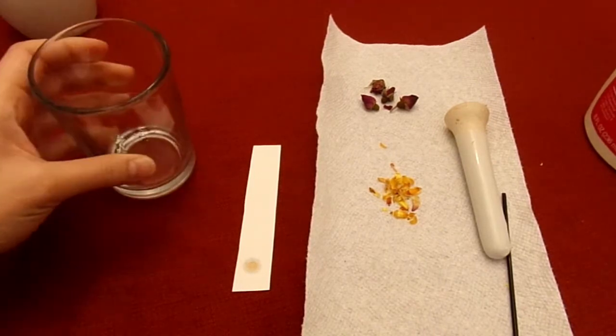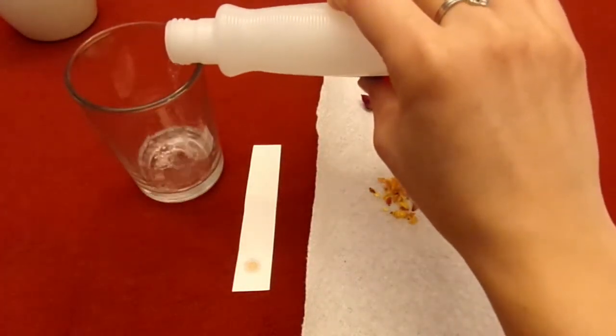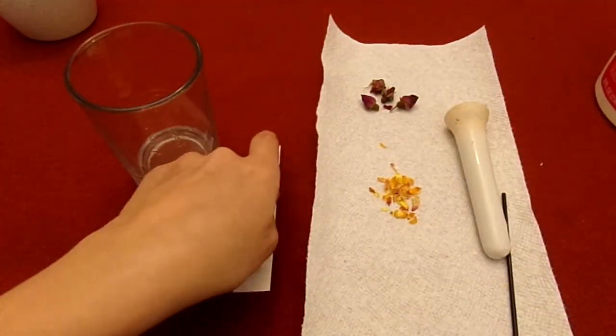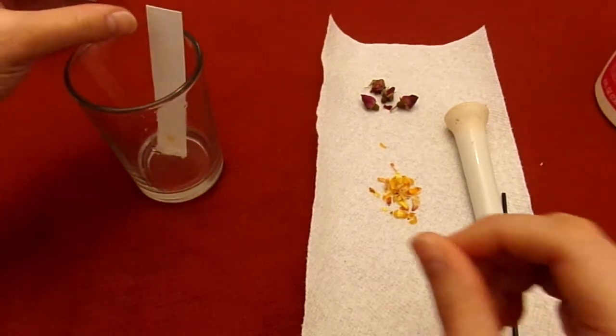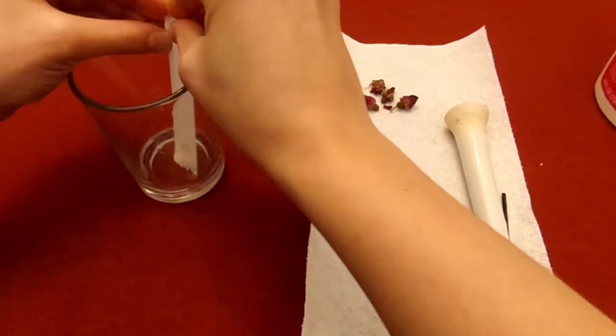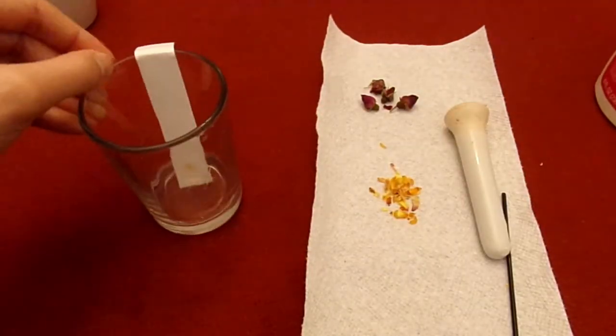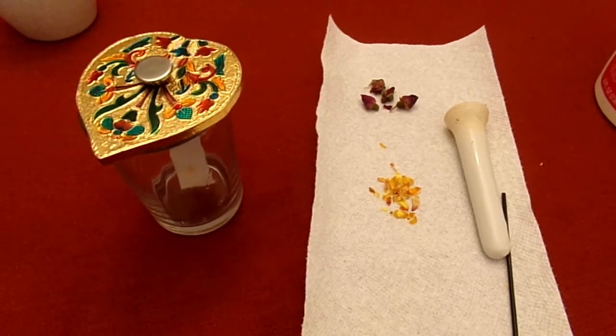Then take your jar and fill it until it has about a quarter of an inch of acetone in the bottom. Take your paper strip and add it to the jar. If it's too long you can bend over the top. Then place a lid on top and wait for the liquid to travel up to the top of the paper.